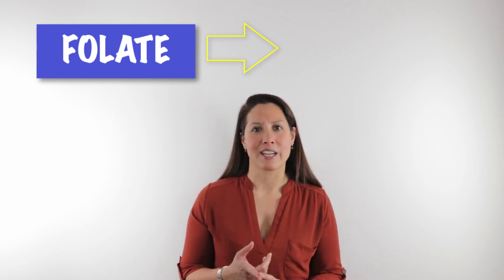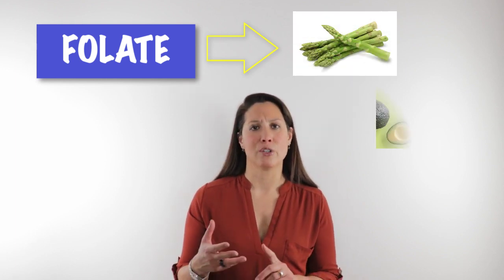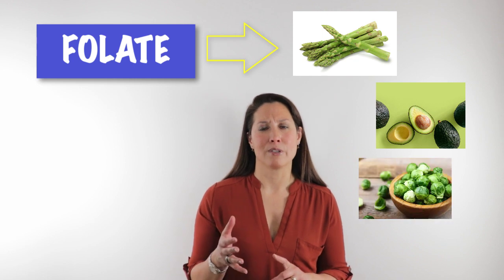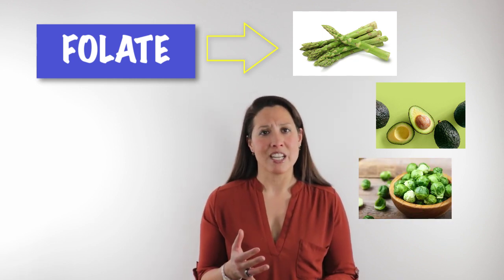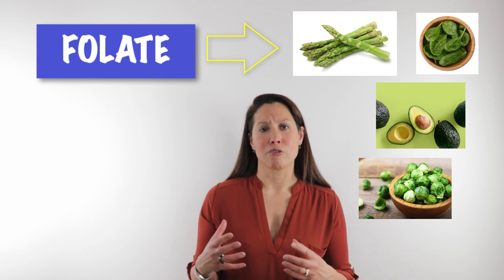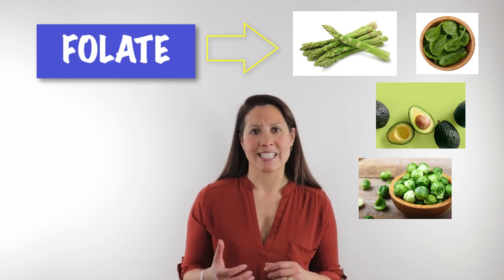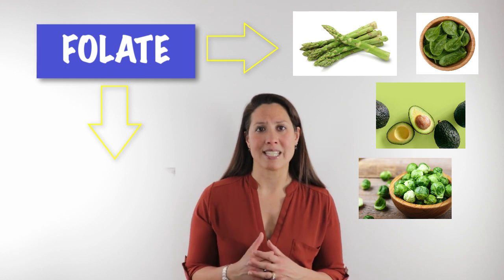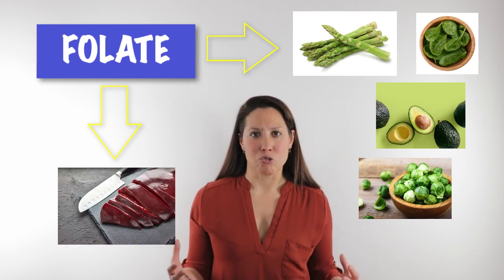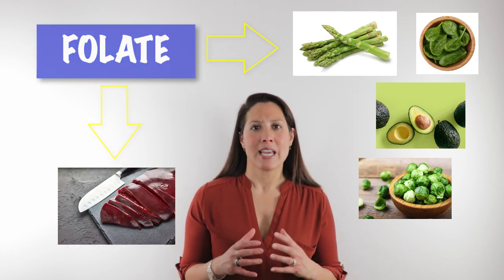The ways that we can take in natural forms of folate are from sources in our food supply. This can be from asparagus, avocados, and brussels sprouts. We can also find it in spinach, green leafy vegetables, and lettuce. You can also find it in organ meats like liver, ideally from grass-fed animals, and this could be a great source of folate. The other way is that you could also be supplementing with folate.